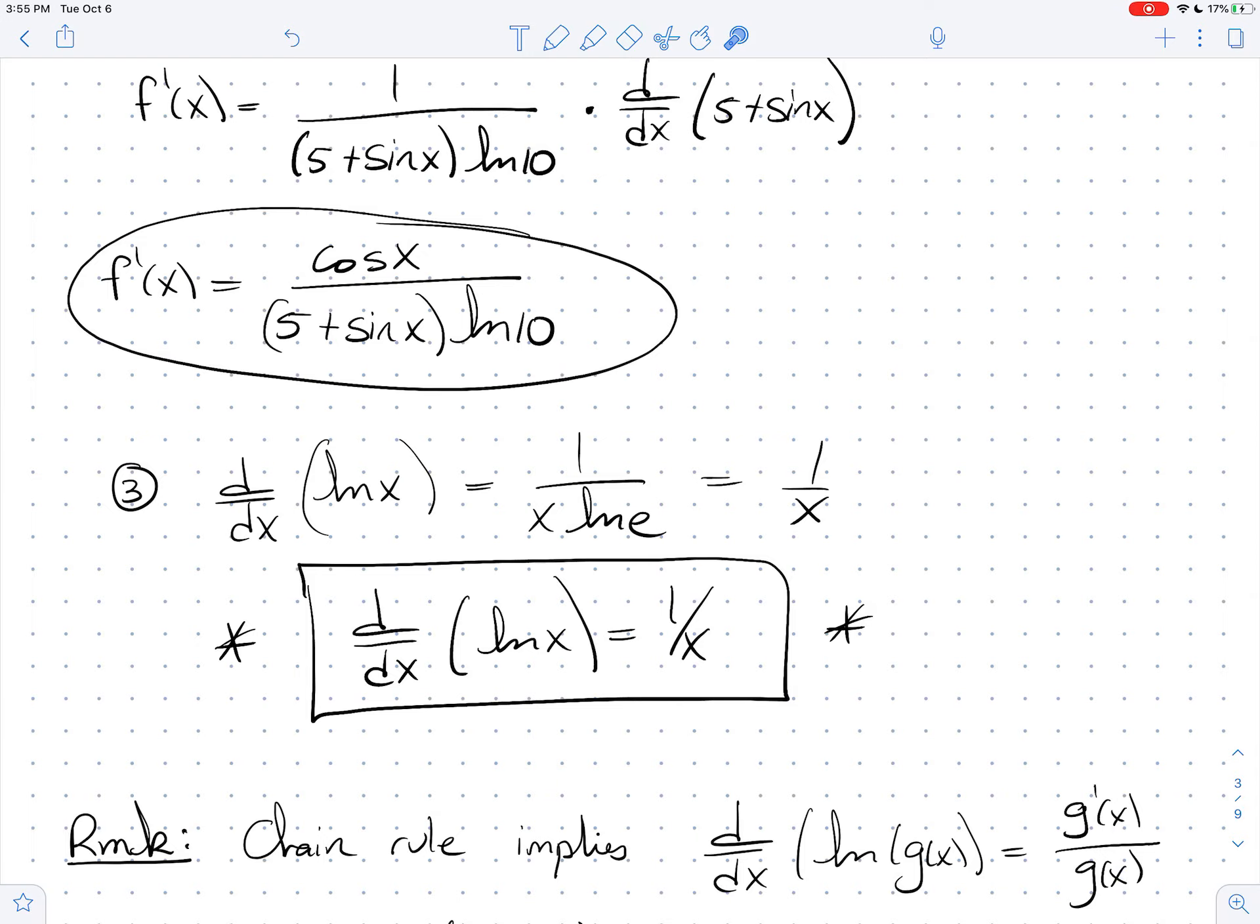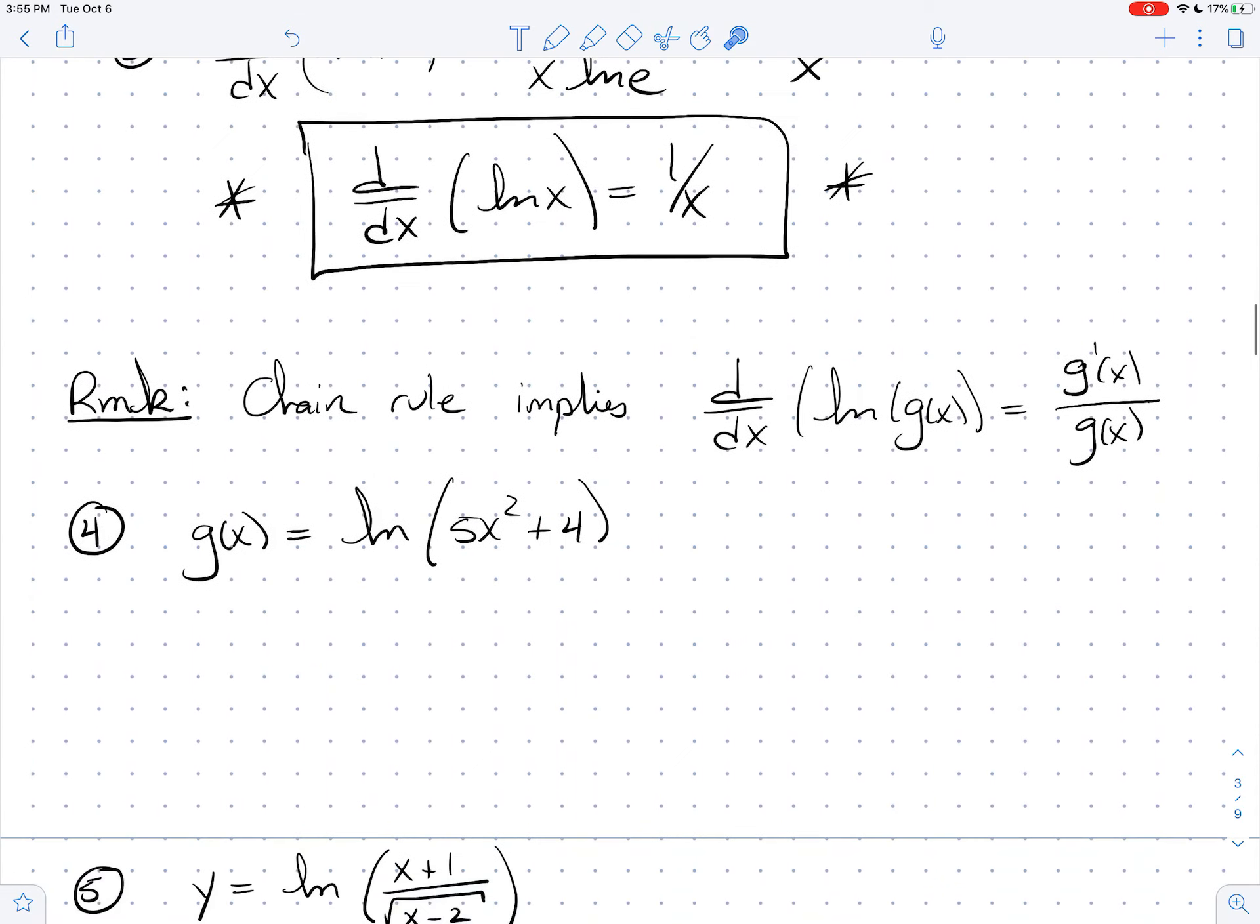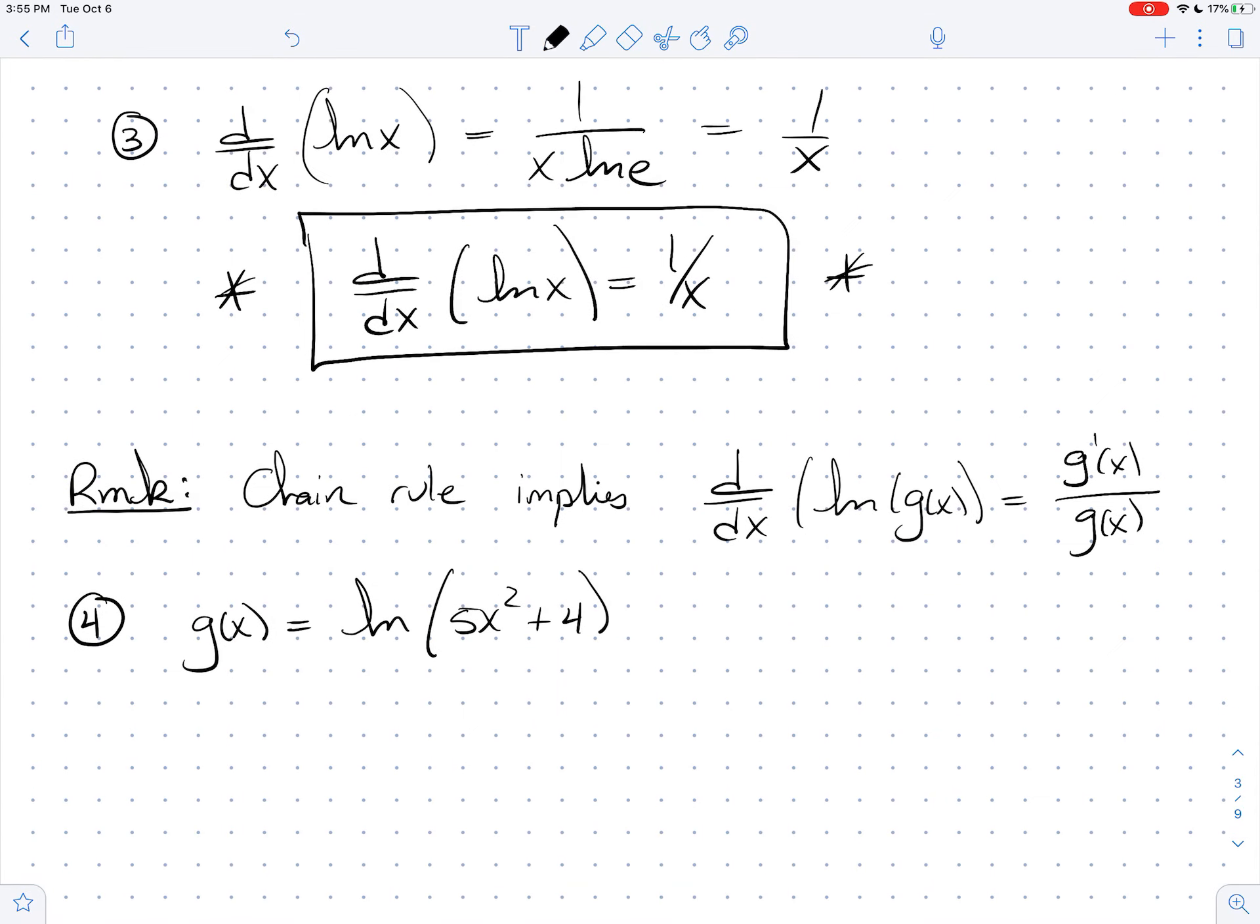And so with that in mind, we can do example 4. So here's this function, and these are really nice. Just g prime of x is really straightforward to write down. It's just the derivative of the inside, which is 10x, over the inside, which is 5x squared plus 4.